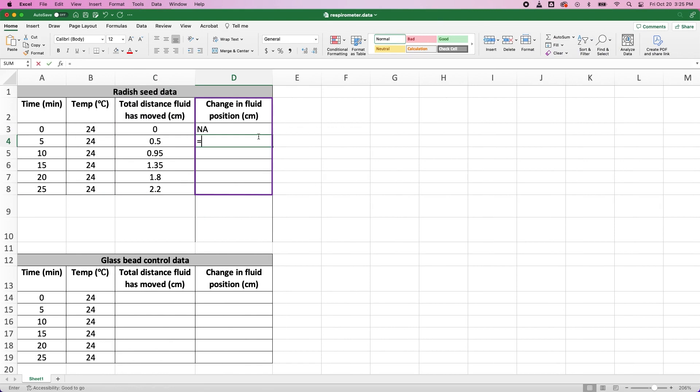Finally, in the fourth column, I'll calculate the change in fluid position during a given time interval by subtracting the previous time's total distance from the current time's total distance.